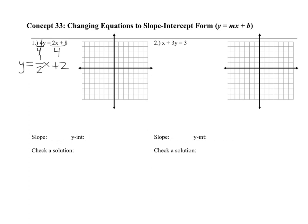So now you know your slope is 1 half and your y-intercept is (0, 2). You can go ahead and graph it — start at (0, 2) and rise 1, run 2. So you go up 1 over 2, up 1 over 2.